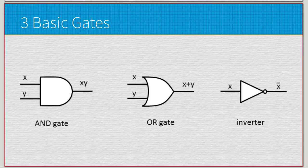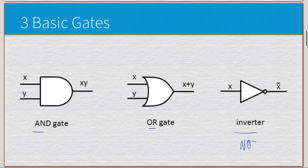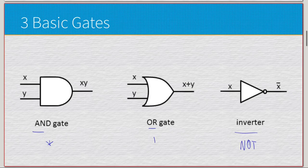Here we have our three basic gates: the AND gate, OR gate, and an inverter — also known as a NOT gate. You might wonder why we care about these three. Well, with disjunctive normal form and conjunctive normal form, we have a function complete set with AND, OR, and NOT, which gives us multiplication, addition, and negation. We can create anything using these three.